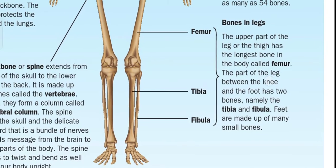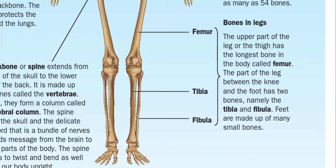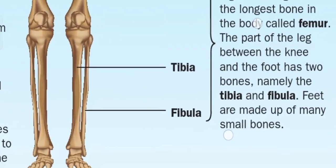Now let's discuss the bones in the legs. In the legs, there are also three bones: femur, tibia, and fibula. The upper part of the leg, or thigh, has the longest bone in the body called the femur. The part of the leg between the knee and the foot has two bones, namely tibia and fibula. The feet are made up of many small bones.